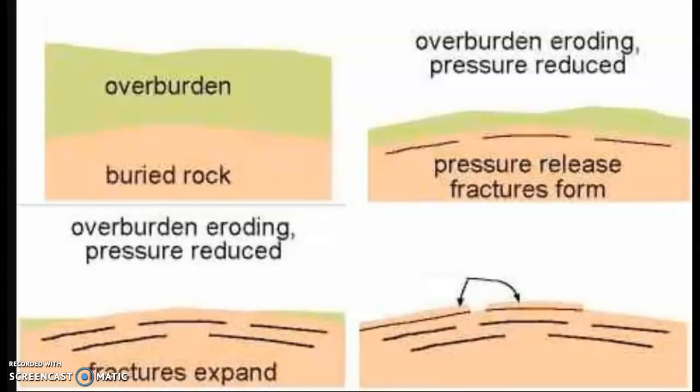This image shows there is an overburden — layers of materials, whether sediments, rocks, or debris — which has a specific weight and actually compresses the existing rock at the bottom. This rock is under pressure. However, as time progresses, due to the processes of erosion and mass movements, this overburden can be reduced — it can be washed away or blown away — leaving less weight pressing down upon the existing rock.